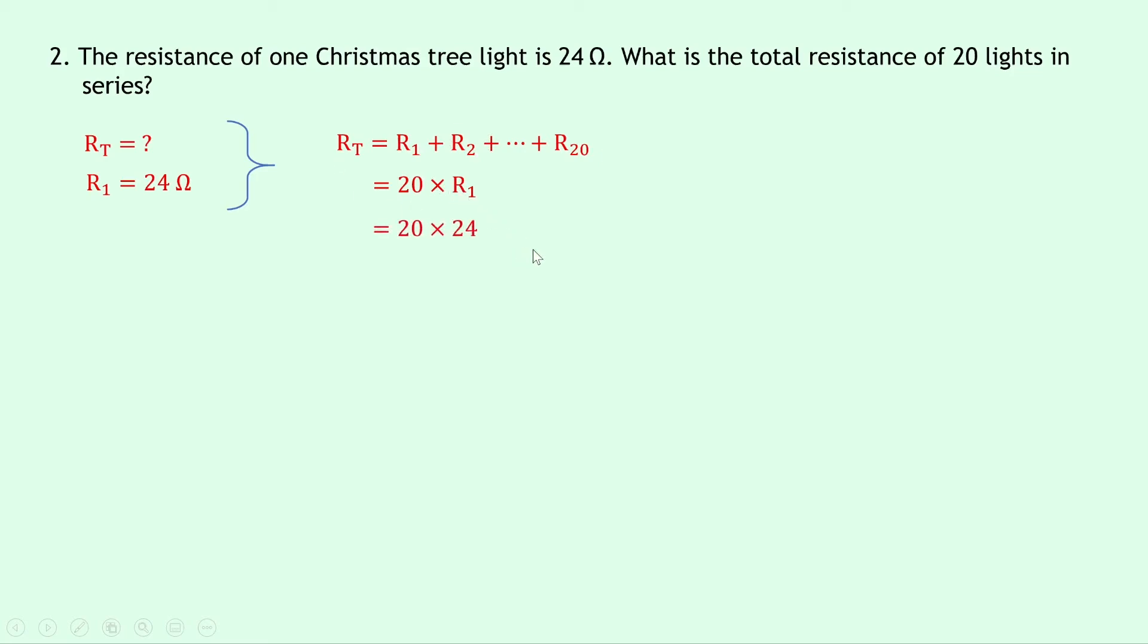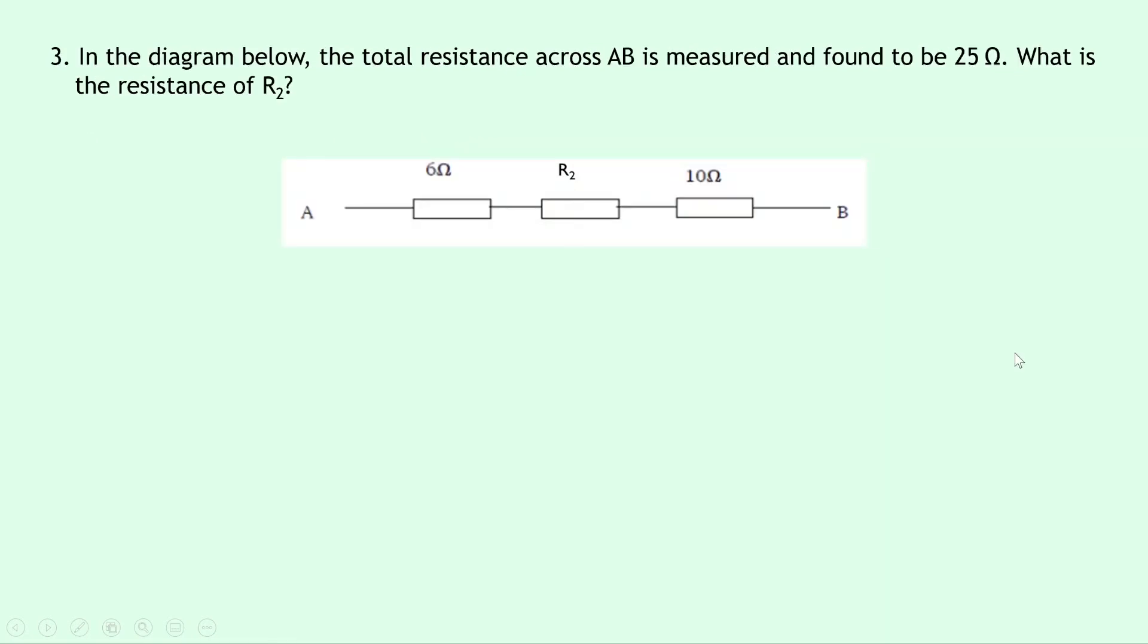Lastly, question 3 says that in the diagram below, the total resistance across AB is measured and found to be 25 ohms. What is the resistance of R2? Well, there's AB and we've got this unknown resistor R2. So writing down what we know from the question, we know that R2 is what we're trying to find.